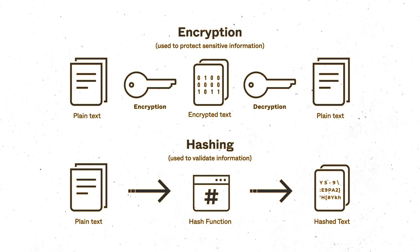On the other hand, encryption is a reversible process that converts plain text data into ciphertext using an algorithm and a key. Its primary goal is to ensure data confidentiality, protecting sensitive information during transmission over a network or when stored in a database. Encryption is widely used to secure communication protocols like HTTPS and to protect critical data from unauthorized access.